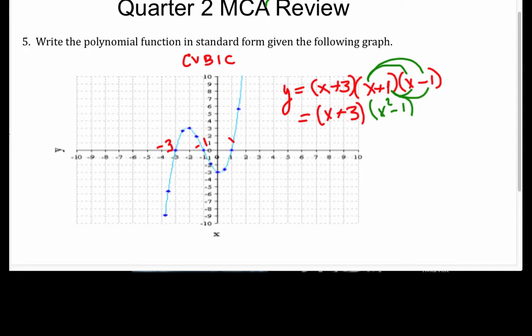Alright, so let's now take a look at what we have left. So now we have to take the x and multiply everything out. So an x times an x squared is going to give me an x cubed, and x times a negative 1 is going to give me negative x. 3 times x squared is plus 3x squared, and then 3 times a negative 1, that's going to give me negative 3.